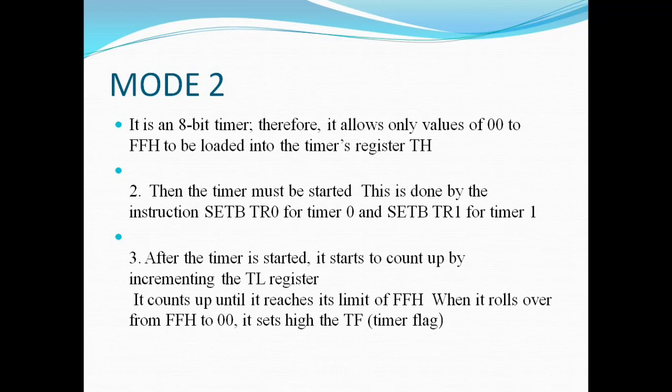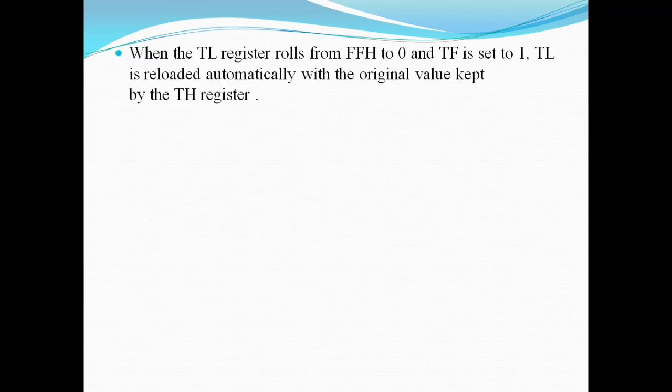The TL register will start counting from the loaded value up to FFH, and from FFH it will roll over to 00 after application of one more clock pulse. Whenever there is a change over from FFH to 00, it sets the timer overflow flag. When the TL register rolls over and sets the flag, TL is reloaded automatically with the original value kept by the TH register.